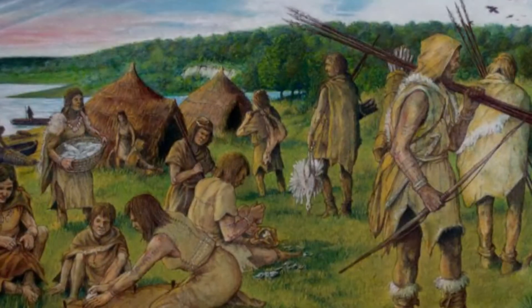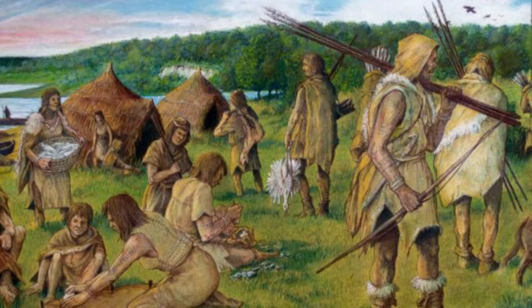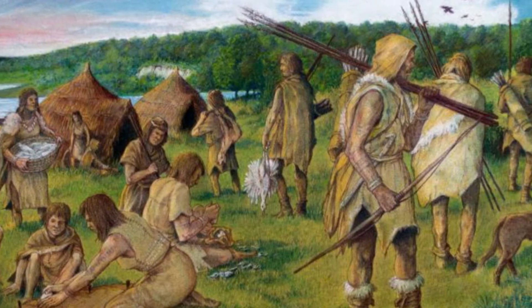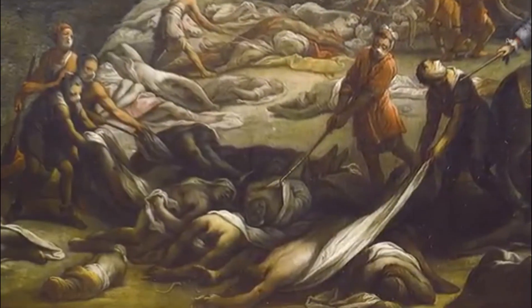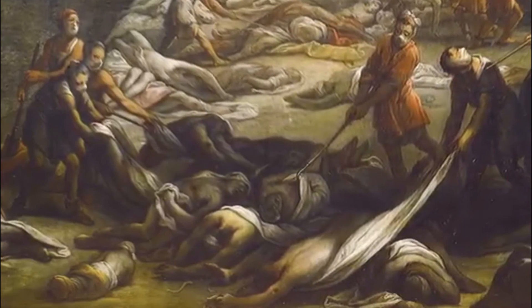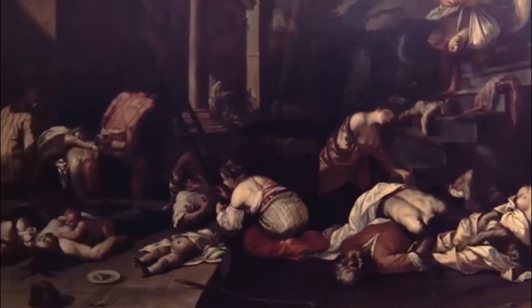The communicable diseases existed during humankind's hunter-gatherer days, but the shift to agrarian life 10,000 years ago created communities that made epidemics more possible. Malaria, tuberculosis, leprosy, influenza, smallpox, and others first appeared during this period.